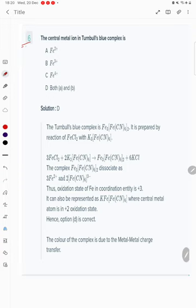Hello students, let's try to understand Problem 6: The central metal ion in Turnbull's blue complex is what? That is Fe2+ and Fe3+. Both A and B are correct.